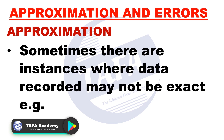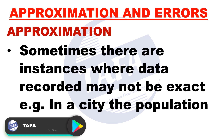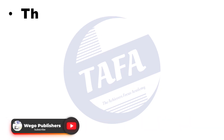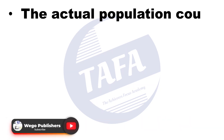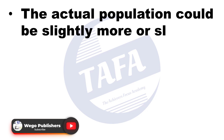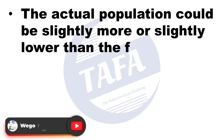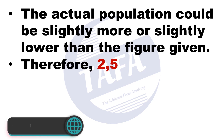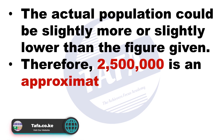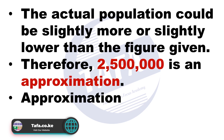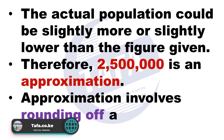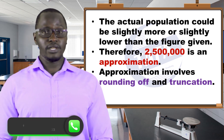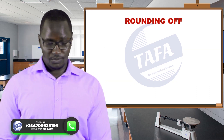For example, in a city the population may be given as two million five hundred thousand, but the actual population could be slightly more or slightly lower than the figure given. Therefore, two million five hundred thousand is an approximation. Approximation involves rounding off and truncating — we shall look at each of them.